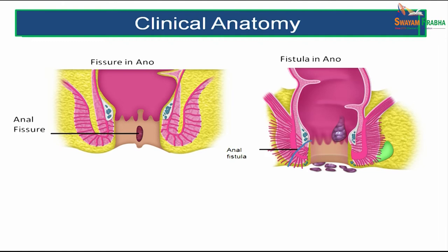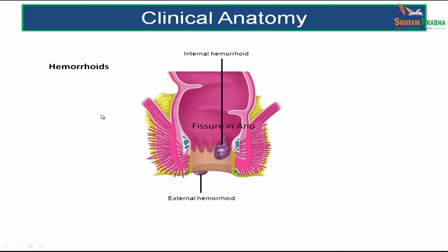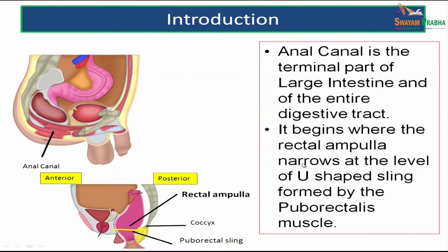Before we go into the Gross Anatomy of the Anal Canal, I would like to mention some of the applied anatomy of the anal canal. As you can see from the picture, first is fissure in ano, second is fistula in ano, and the next clinical condition is hemorrhoids, which can be internal and external hemorrhoid. We will now discuss the Gross Anatomy of the Anal Canal to understand the applied aspects.